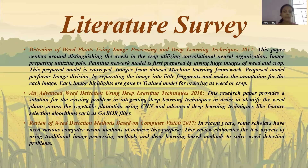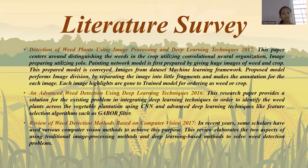The second paper is 'An Advanced Weed Detection using Deep Learning Techniques,' published in 2016. It also uses a convolutional neural network, but applies a different filter — specifically a copper filter.